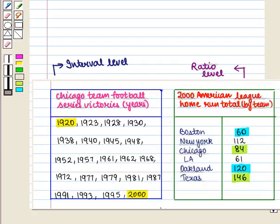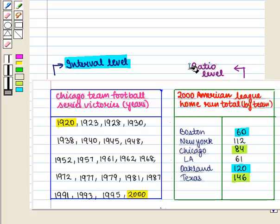Thus we can say that the first data set is at the interval level and the second data set is at the ratio level, which is the required answer. This completes our session. Hope you enjoyed this session. Thanks so much for watching.